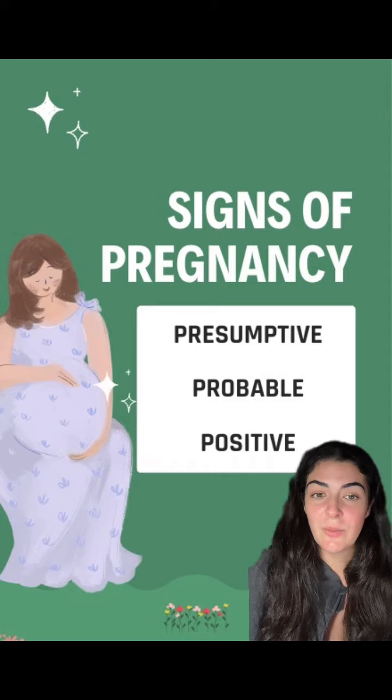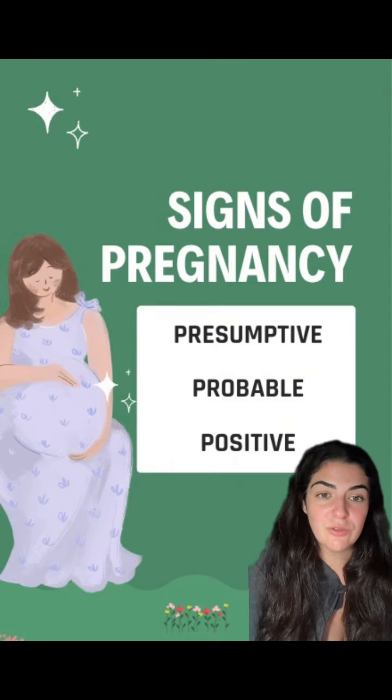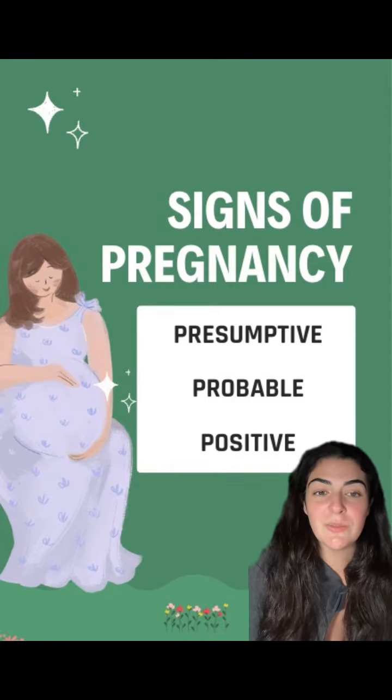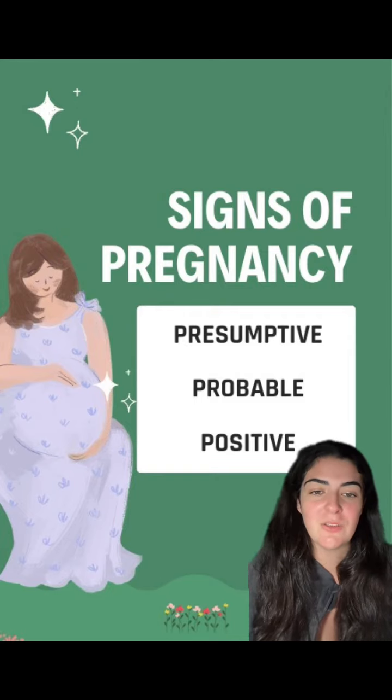And lastly, amenorrhea — which is no menstrual cycle — is another presumptive sign because the patient is subjectively telling you this.